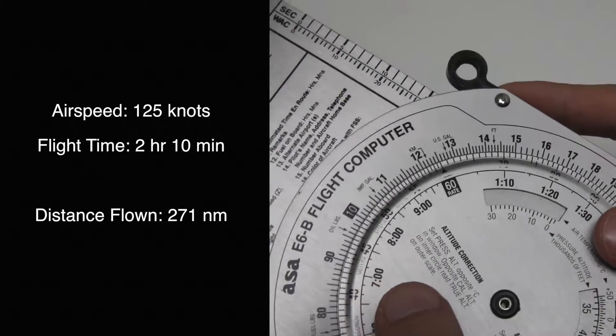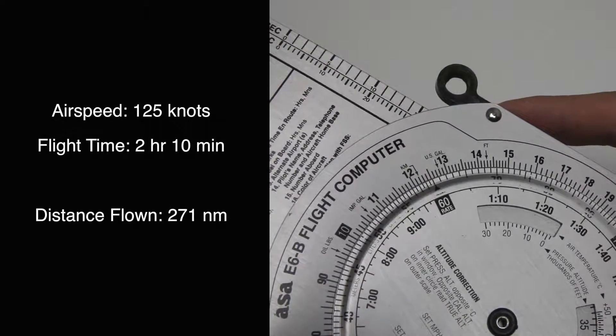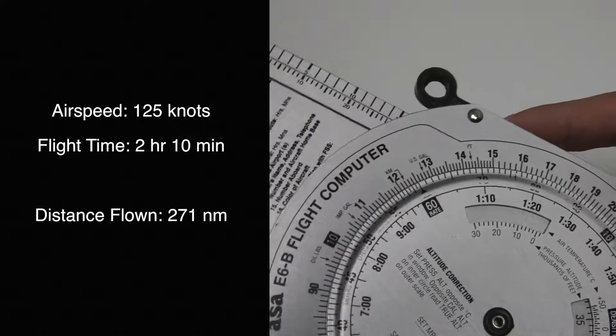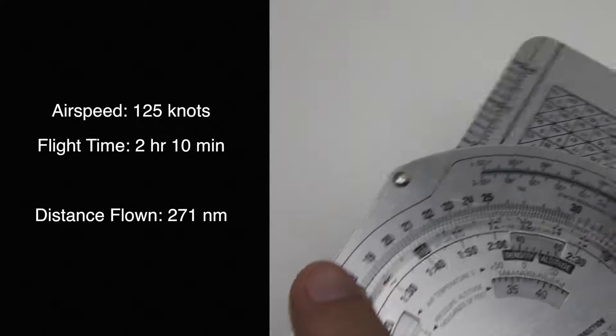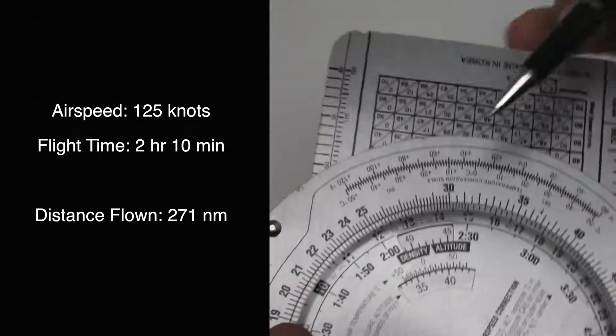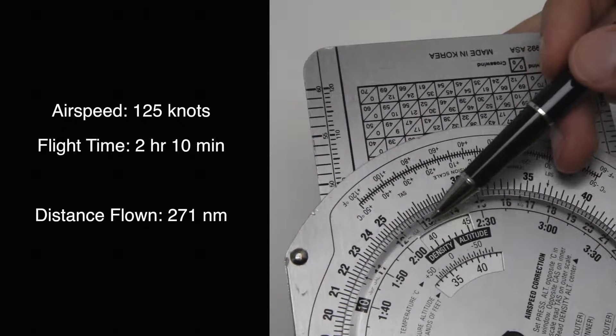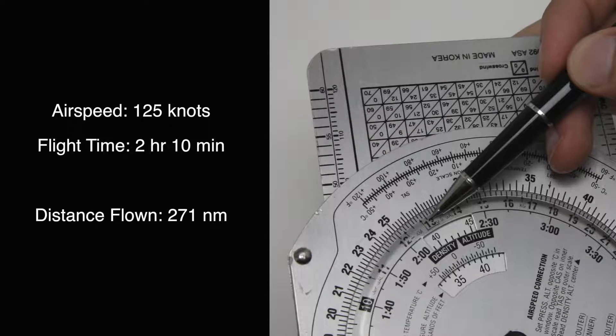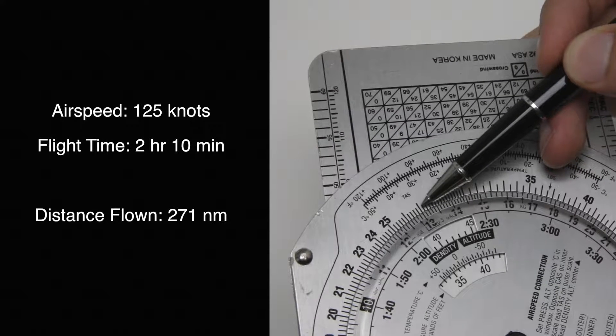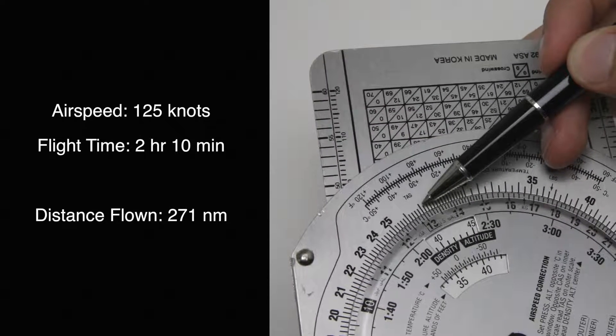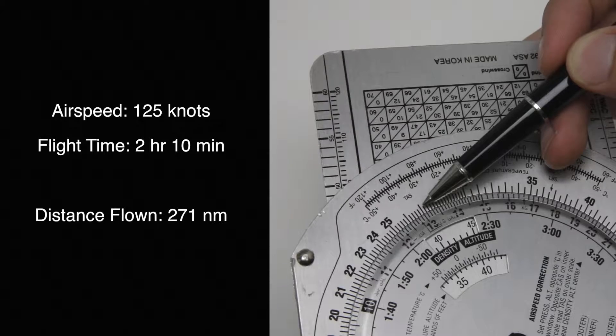Then we're going to go to a time of—correction—two hours and ten minutes. So two hours and ten minutes is going to be somewhere around here, so that is going to be 271 miles.